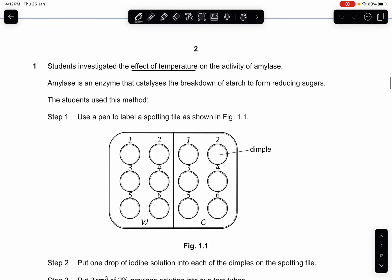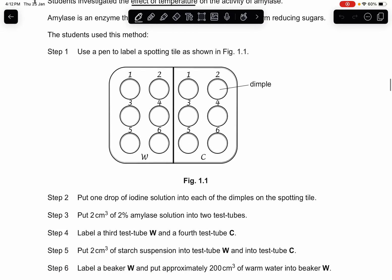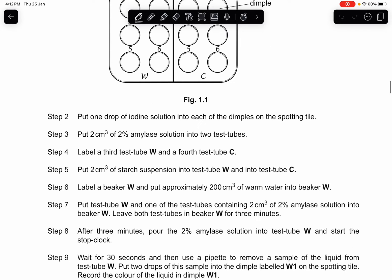Let's start with the first question. Question 1: Students investigated the effect of temperature on the activity of amylase. Amylase is an enzyme that catalyzes the breakdown of starch to form reducing sugars. The students used this method. Step 1, use a pen to label a spotting tile as shown in figure 1.1. Step 2, put 1 drop of iodine solution into each of the dimples. Step 3, put 2 cm³ of 2% amylase solution into 2 test tubes.